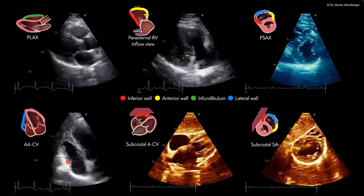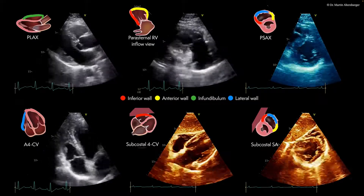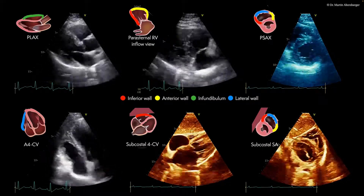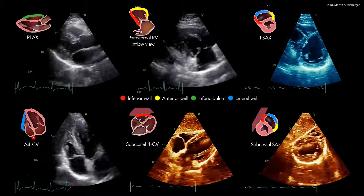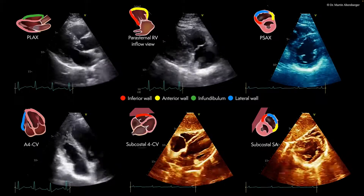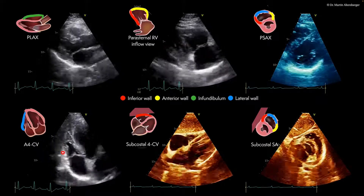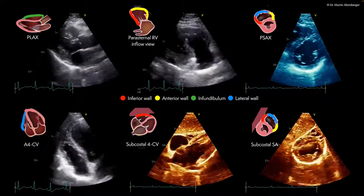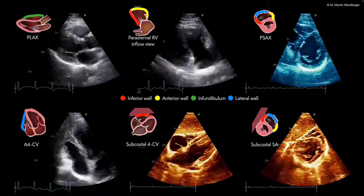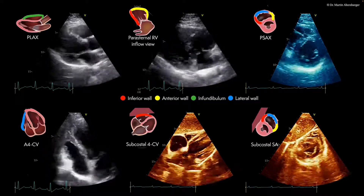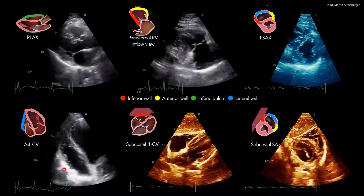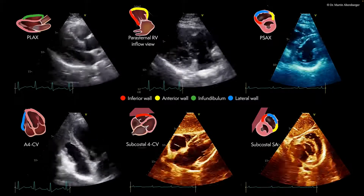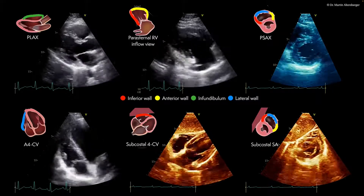In a focused four-chamber view, where you visualize the right ventricle, we have the free lateral wall, which we are also scanning and interpreting in, for example, strain echocardiography with the free wall strain, or where we measure the TAPSE and the S' in this region, so the lateral tricuspid annulus.